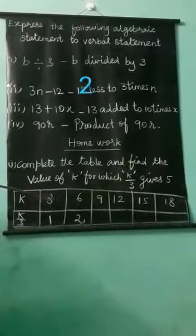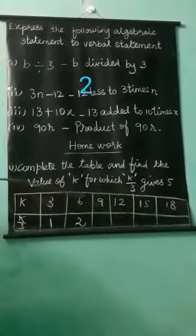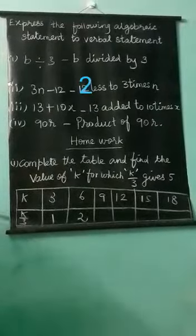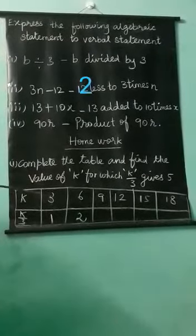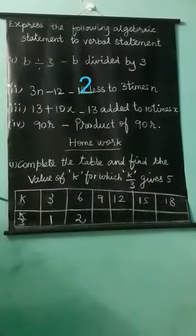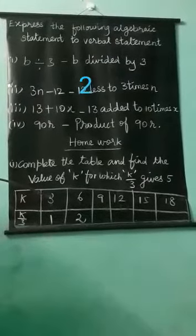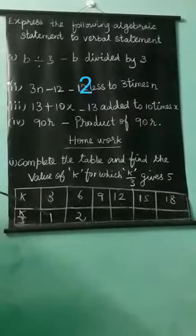K is here. The values are given. 3, 6, 9, 12, 15 and 18. K by 3. Because K by 3 means 3 by 3. How to 3 divided by 3? What is the answer? 1.